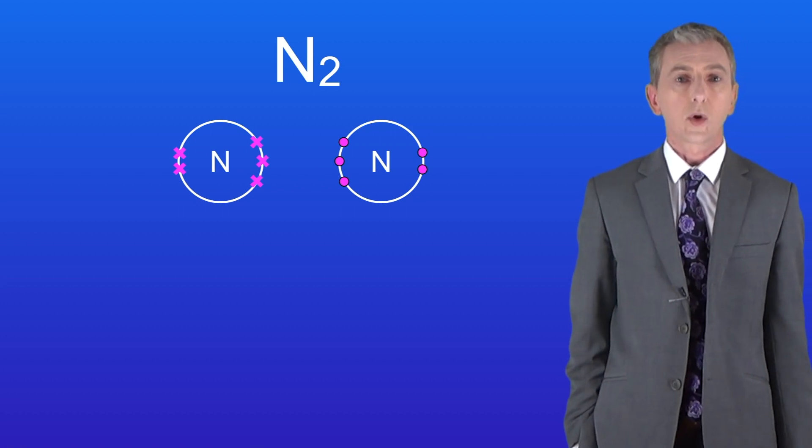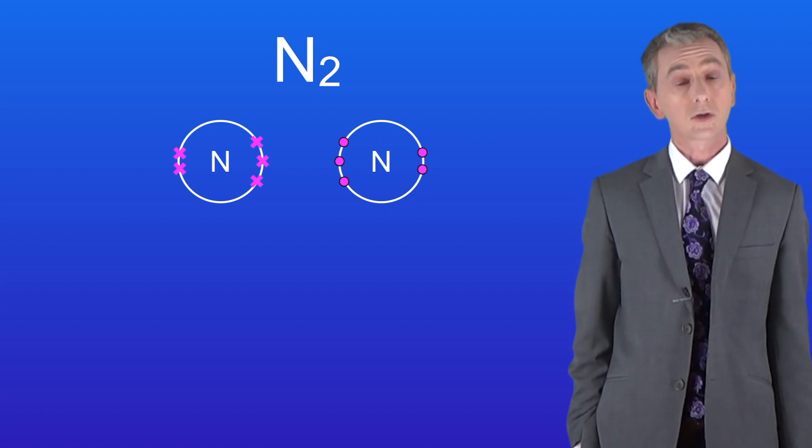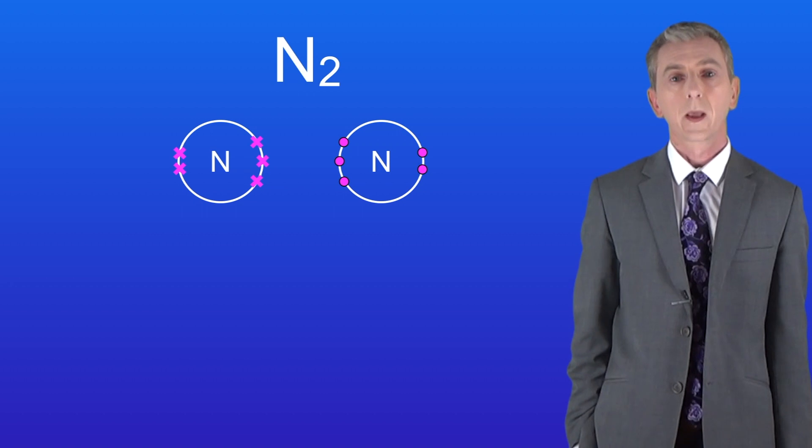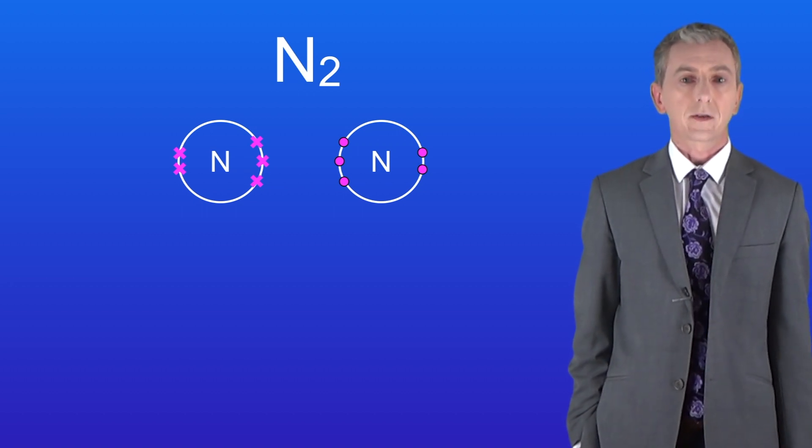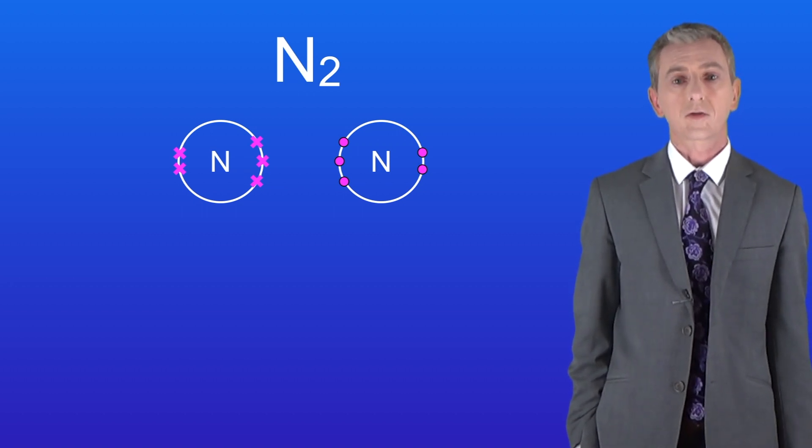Okay here's the final small covalent molecule. This is the nitrogen molecule N2. As you can see nitrogen atoms have got five electrons in their outer energy level.